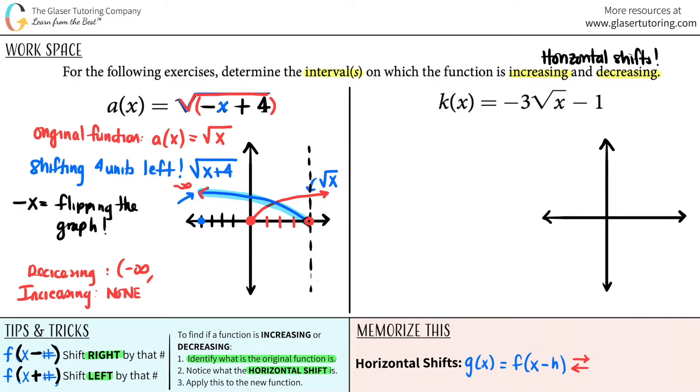And we come all the way down to one, two, three, four. And there you go. All right. So we have a decreasing interval here, but no increasing intervals. And this is your answer.